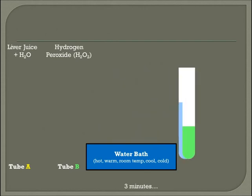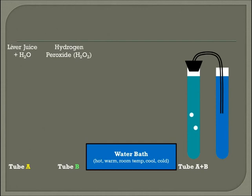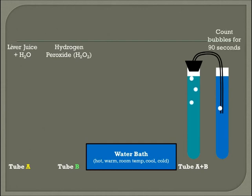After the 3 minutes are done, I'm going to combine them into a single tube — both A and B — and immediately cover it with the stopper. Why? Because instantly it's going to start making bubbles. Those bubbles are going to go through into a different one, and I'm going to count the number of bubbles that come out for 90 seconds.